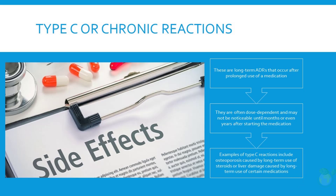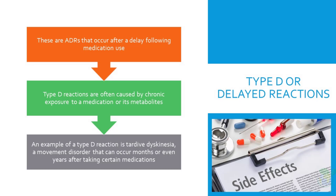Type C, or Chronic Reactions, are long-term ADRs that occur after prolonged use of a medication. Type D reactions are ADRs that occur after a delay following medication use — they may occur weeks or even months after the medication has been discontinued. Type D reactions are often caused by chronic exposure to a medication or its metabolites. An example of a type D reaction is tardive dyskinesia, a movement disorder that can occur months or even years after taking certain medications.